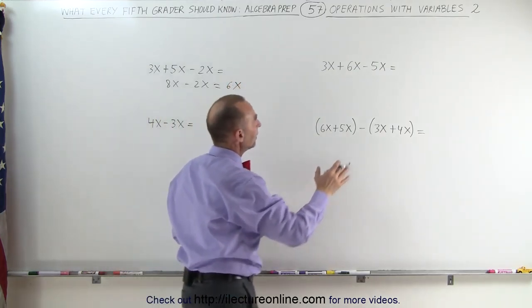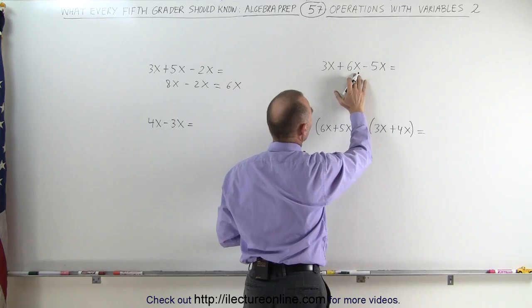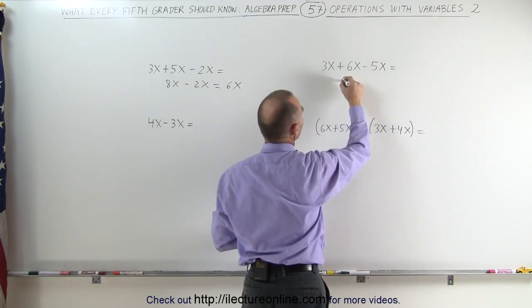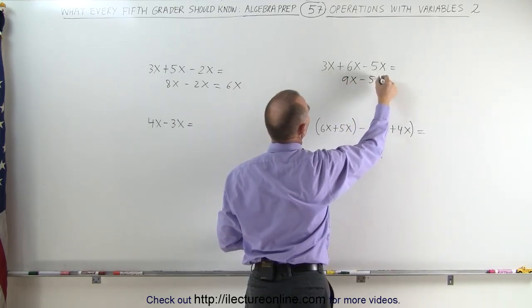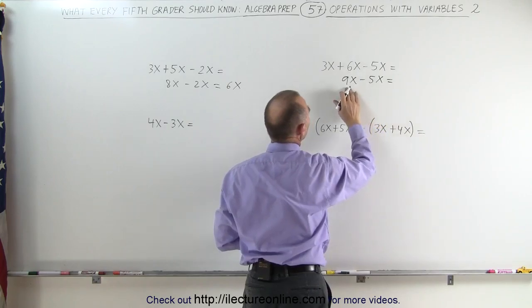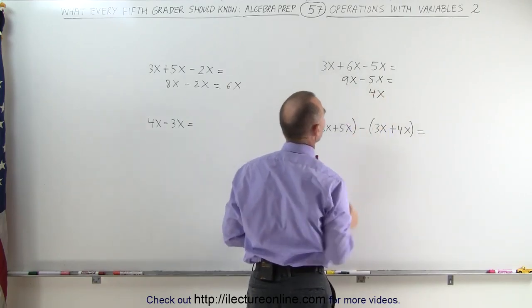Here, we do it again. We have 3x plus 6x. When we add those two together first, we get 9x minus 5x, and 9x minus 5x is equal to 4x.